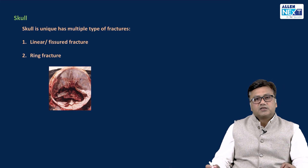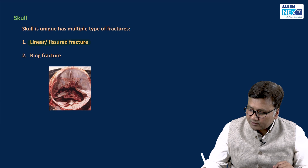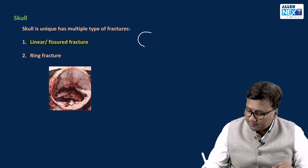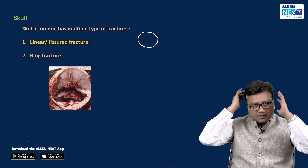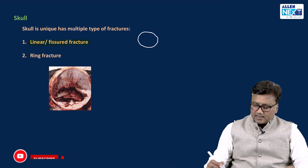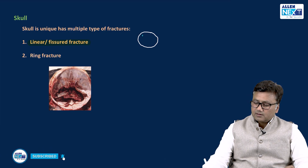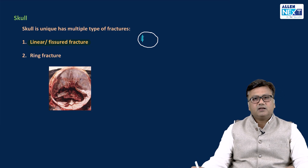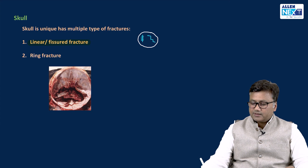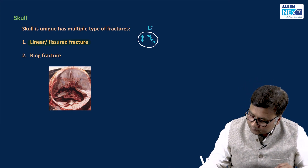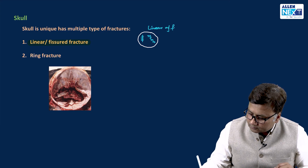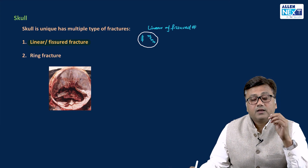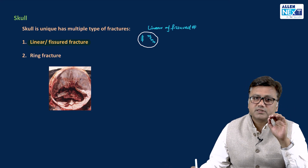The first skull fracture we are talking about is linear or fissured fracture. It is a fracture which can be seen on the skull cap. If the skull is hit with a blunt weapon and there is a straight line which cracks in the skull, or maybe in a slightly zigzag fashion creating a fissure, that is called a linear or fissured fracture. This is said to be the most common type of skull fracture seen.